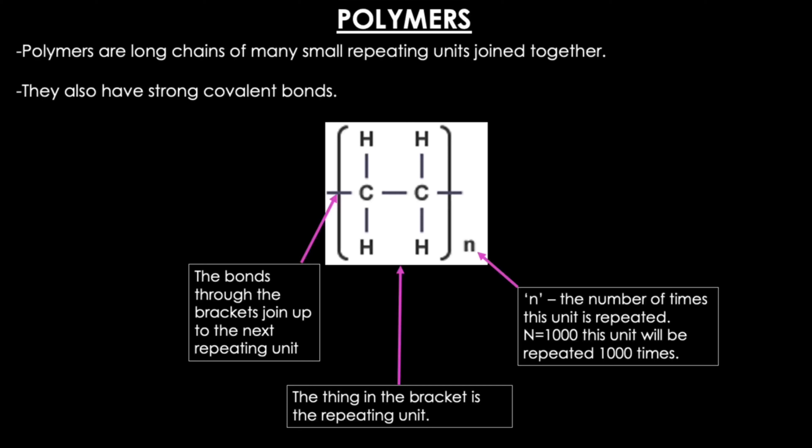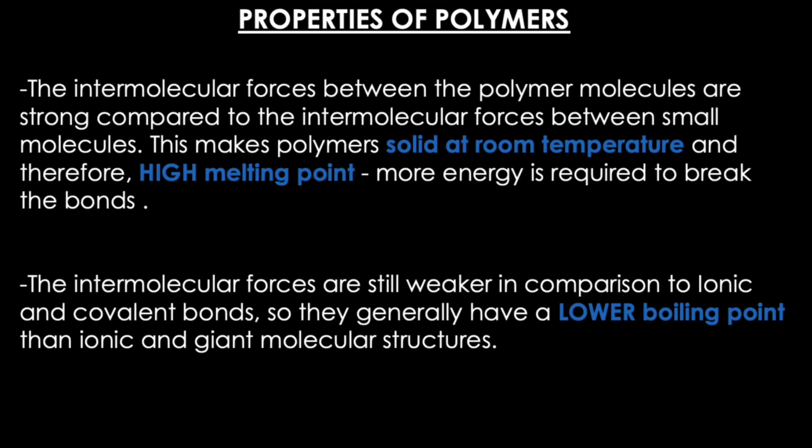Polymers are long chains of many small repeating units joined together, and they also have strong covalent bonds. Instead of drawing out a whole long polymer molecule which can contain thousands or even millions of atoms, you can draw the shortest repeating section called the repeating unit. In this case the repeating unit is ethane, made up of carbon and hydrogens. The n outside the brackets is the number of times this unit is repeated — for example n can be a thousand. The bonds are drawn out of the brackets to show that it joins up with the next repeating unit.